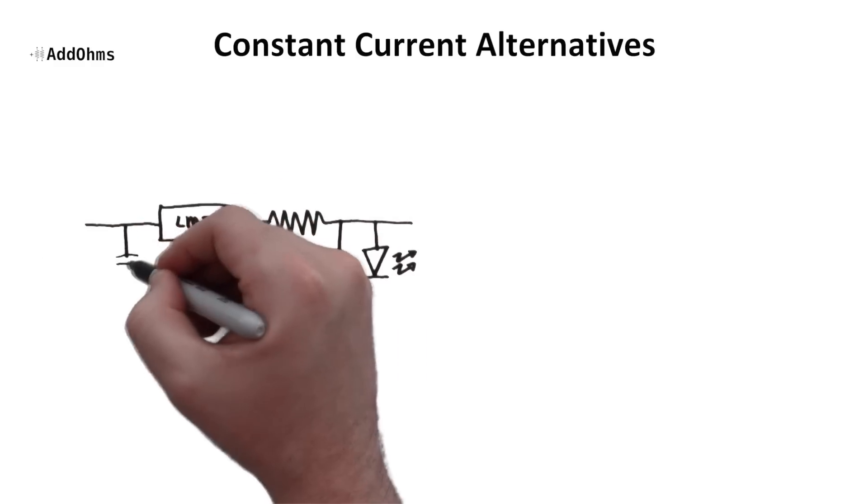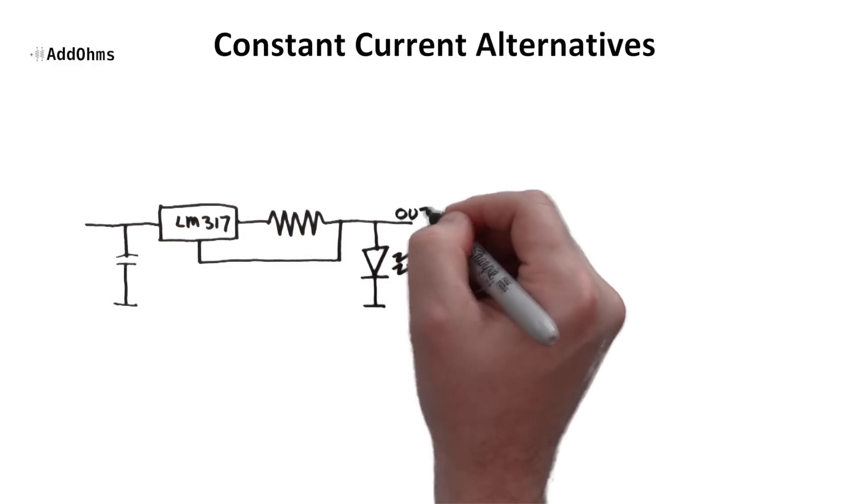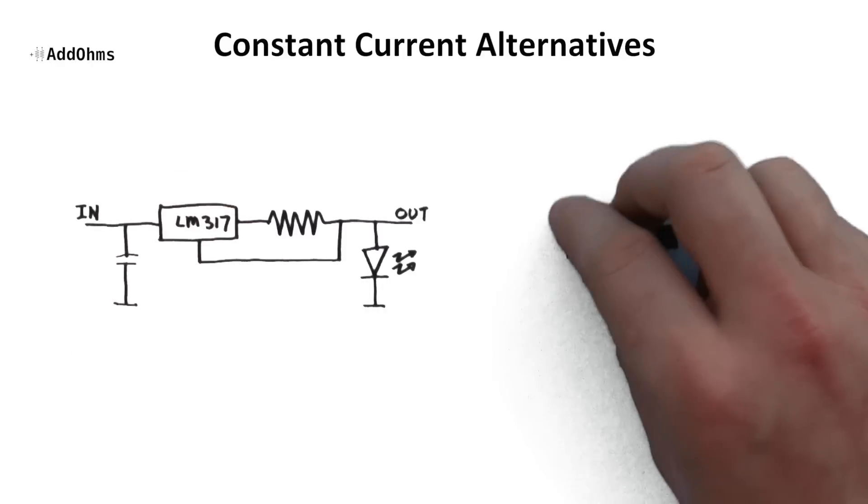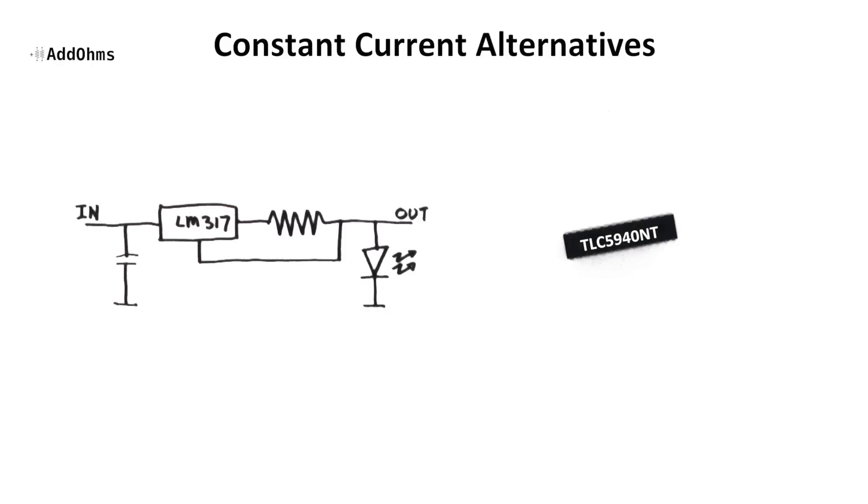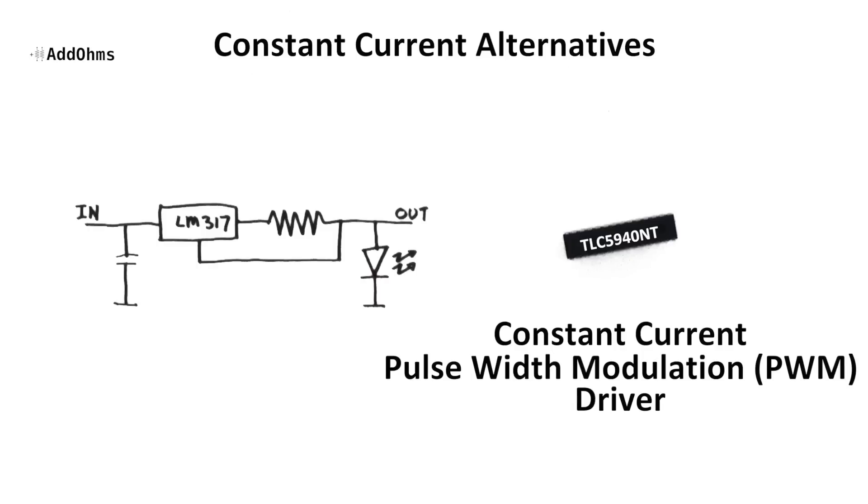Examples include this modified LM317 circuit, and another example is the chip from TI called the TLC5940, which is a constant current PWM driver, which is very commonly used to drive LEDs.